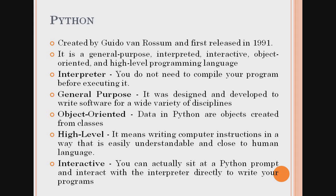Python is a general purpose, interpreted, interactive, object-oriented, and high-level programming language. What does interpreted mean? Interpreted means there is no need for compilation of the program — we can execute the program directly. That is why Python is an interpreted language.